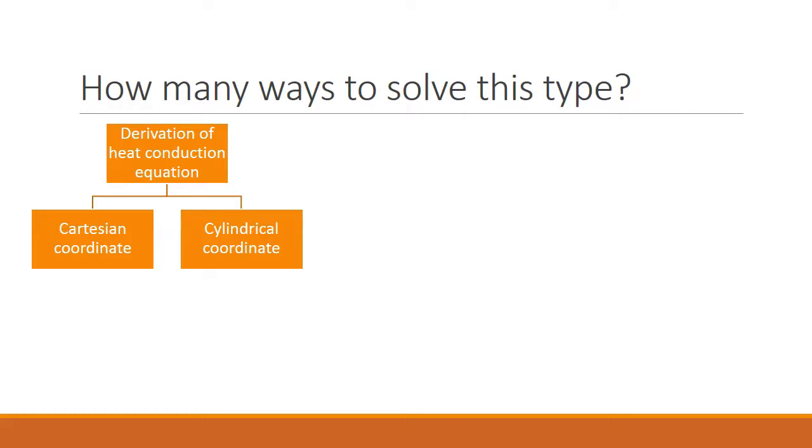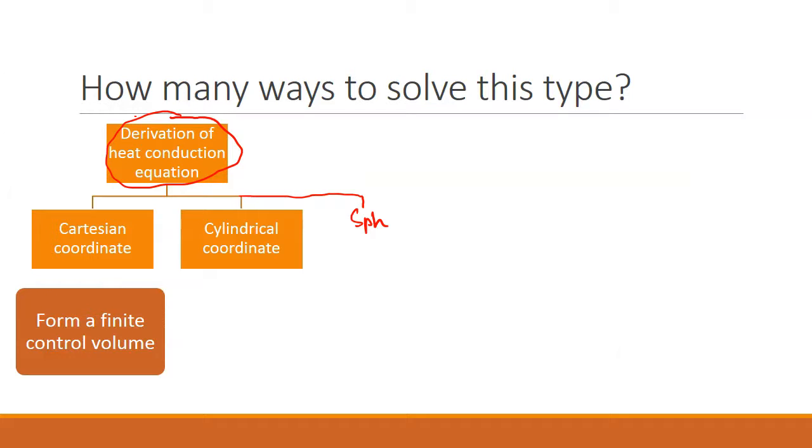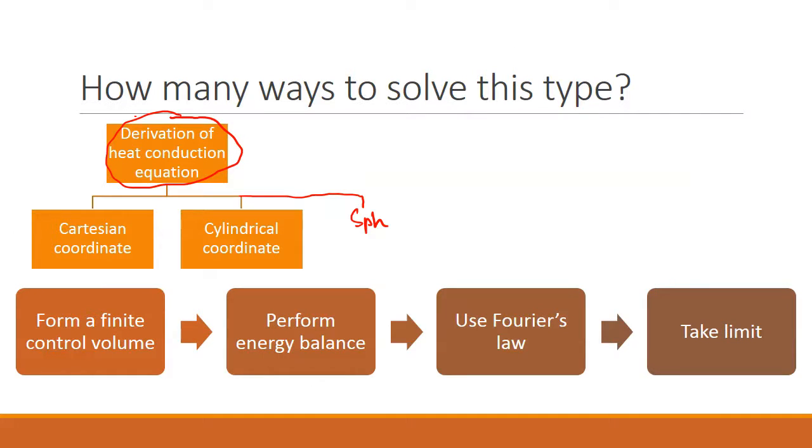As we already said, we are going to do this by analogy with the spherical coordinate system. So what did we do for derivation of heat conduction equation in the other two coordinate systems? We formed a finite control volume, performed energy balance, used Fourier's law, and then took limit. We'll try to do exactly the same step.